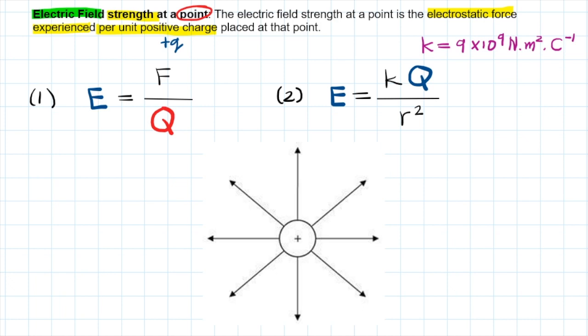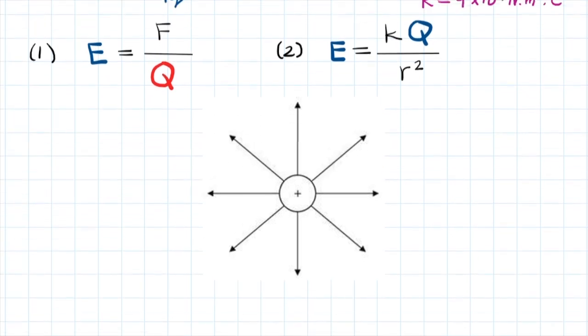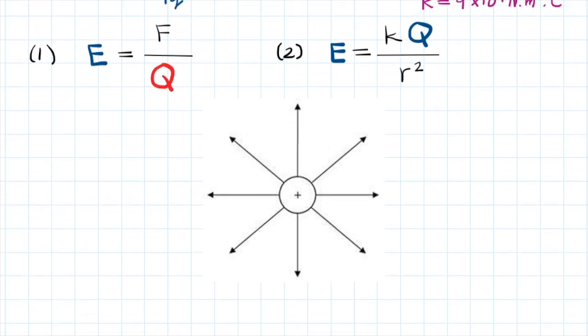To make better sense of this definition, we're going to look at the two formulae that you're provided with to calculate the magnitude of the electric field strength. We have formula number 1, which says that E, the electric field, is equal to F for force divided by Q for charge.